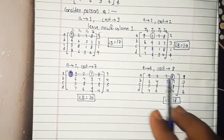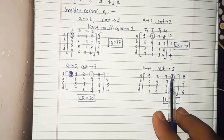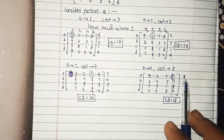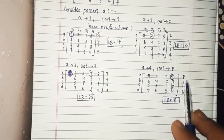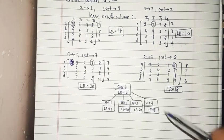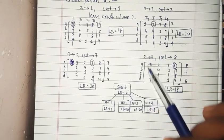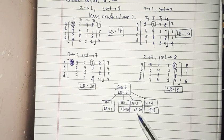For person A assigned to job 4, the cost 8 is circled and those lines are removed. The remaining values are 8, 3, 1, and 6, with an addition of 18. Constructing the tree for A, we started with lower bound equal to 10, and found LB values of 17, 10, 20, and 18 for jobs 1 through 4.